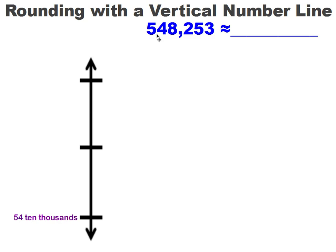54 ten thousands. So this number would fall between 54 ten thousands and 55 ten thousands. But when we round, we probably need to look to see how many thousands we have. If we read this number, it would be 548,000. That's how many thousands I have in this number. How many whole thousands.